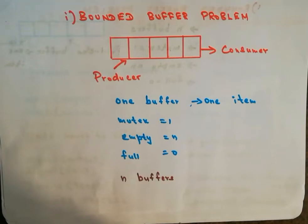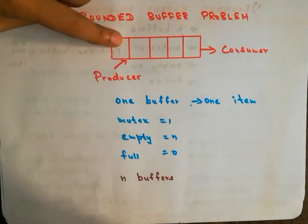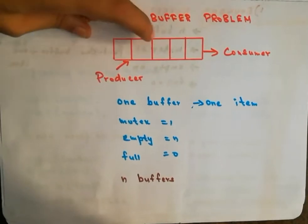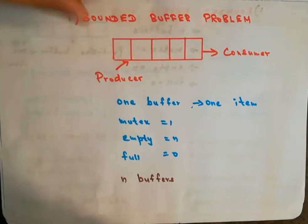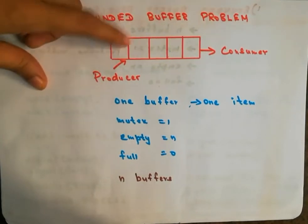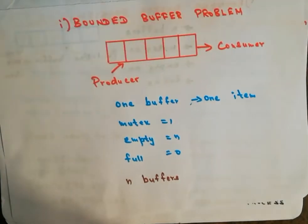Coming back to the details of the bounded buffer problem or the producer-consumer problem: we assume we have a buffer pool which consists of n buffers, and each buffer is capable of holding one item. The producer will produce items and place them into the buffer, and the consumer will consume items from the buffer.